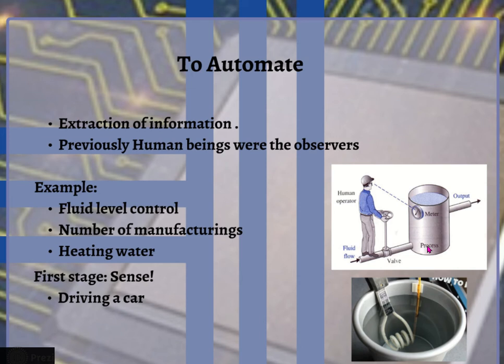Similarly, the amount of items to be manufactured per day by a company needed an observer to count in the past. For example, if you talk about a biscuit manufacturing company that manufactures 10,000 packs of biscuits per day, previously it required counting done by an observer or human. Once the preset number of manufacturing units was attained, the process was stopped manually.